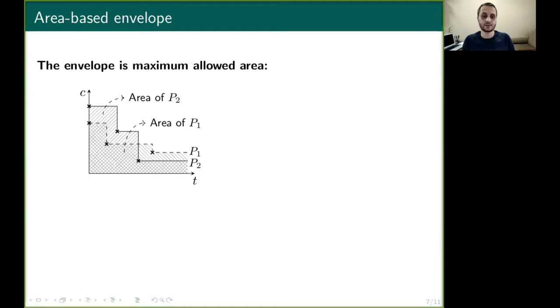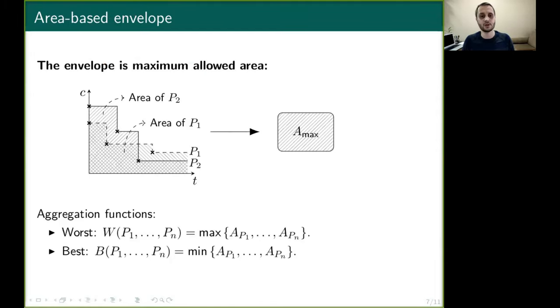A second approach considers the area defined by these profiles, and in this case we want to compute a maximum allowed area, and we use worst and best functions to do this. If at some point the area of the execution is greater than a max, it is capped.